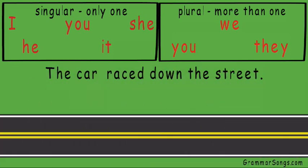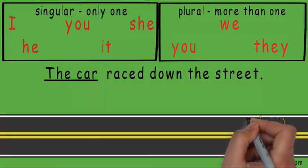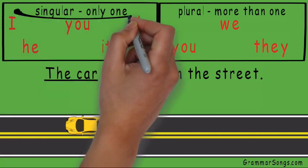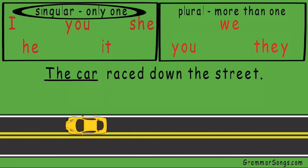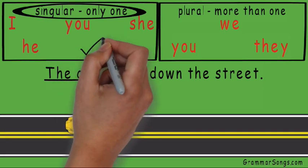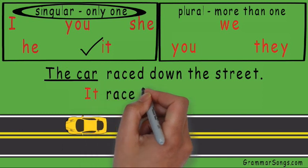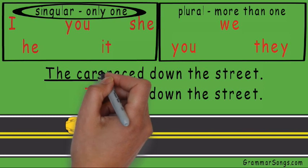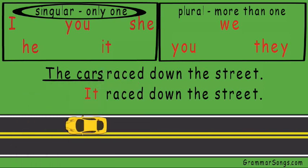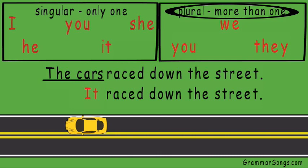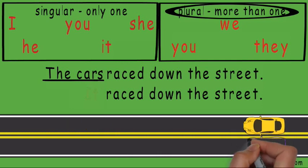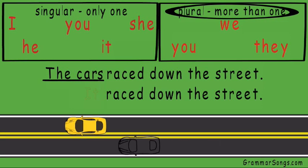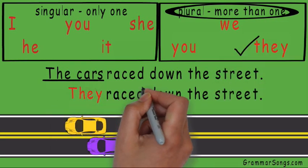In the sentence 'the car raced down the street,' the car is the subject, and since there is only one car, we would need to choose a singular subject pronoun to replace it. Since the car has no gender — it's neither a girl nor a boy — we would choose 'it' as the subject: it raced down the street. If we change 'the car' to 'the cars,' we would need a plural pronoun. Since the cars is a group I'm not included in, I would choose 'they': they raced down the street.